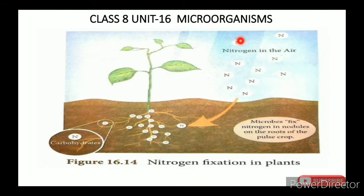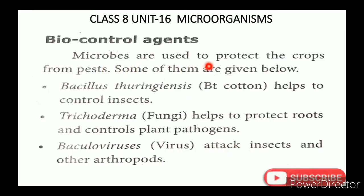Biocontrol Agents: microorganisms are used to protect crops from pests. Bacillus thuringiensis (BT cotton) helps to control insects. Trichoderma fungi help to protect roots and control plant pathogens.